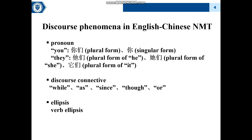Now let us show three discourse phenomena in our work. We choose pronoun, discourse connective, and ellipsis phenomena as our focus. These three phenomena are common in English-to-Chinese NMT, but because of differences between English and Chinese, they are usually mistranslated in models' outputs.